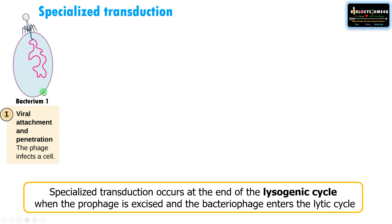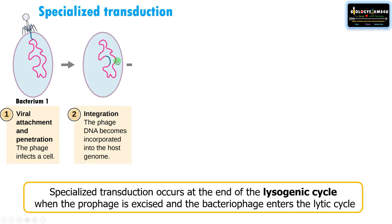First step is attachment of the bacteriophage to the surface of the bacterium. In the lysogenic cycle, the phage genome gets integrated into the bacterial genome. This integrated phage genome is called a prophage.